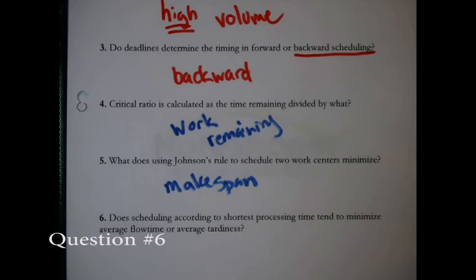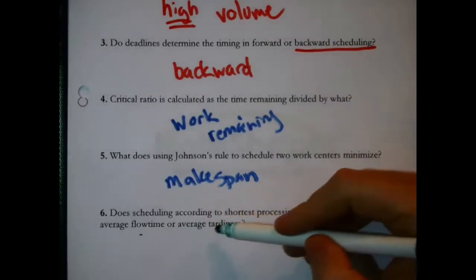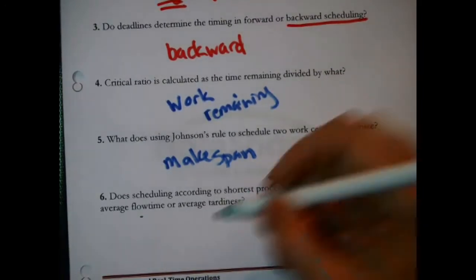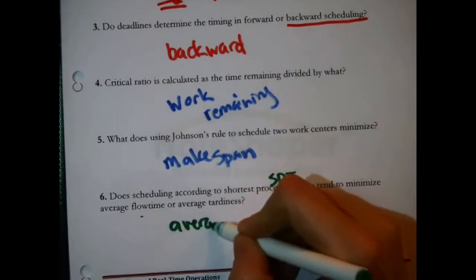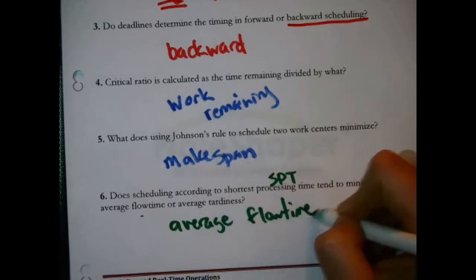Question 6: Does scheduling according to shortest processing time tend to minimize average flow time or average tardiness? Shortest processing time — SPT — the answer is average flow time. Because if you're using shortest processing time, you're sorting the jobs by their processing time. You're not even looking at their deadline, so it wouldn't make much sense that it would minimize average tardiness.